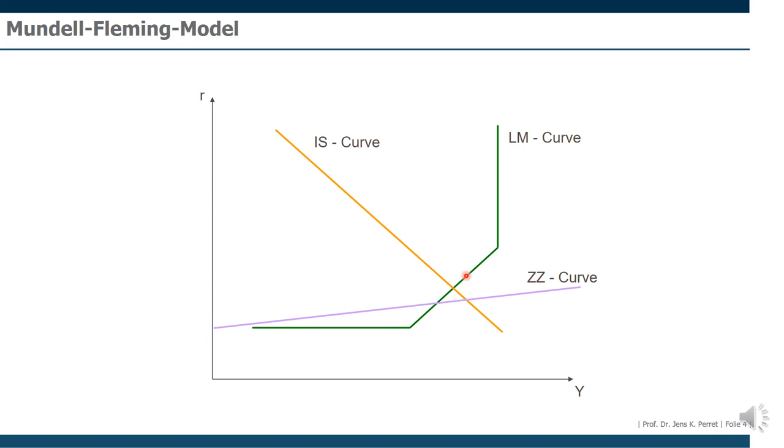And again, as before, depending on the exchange rate regime, one of those two equilibria will be realized. If we have a flexible exchange rate regime, we will end up in this equilibrium. There will be a shift in the IS curve. If we have a fixed exchange rate regime, we will end up in this equilibrium. There will be a shift in the LM curve.